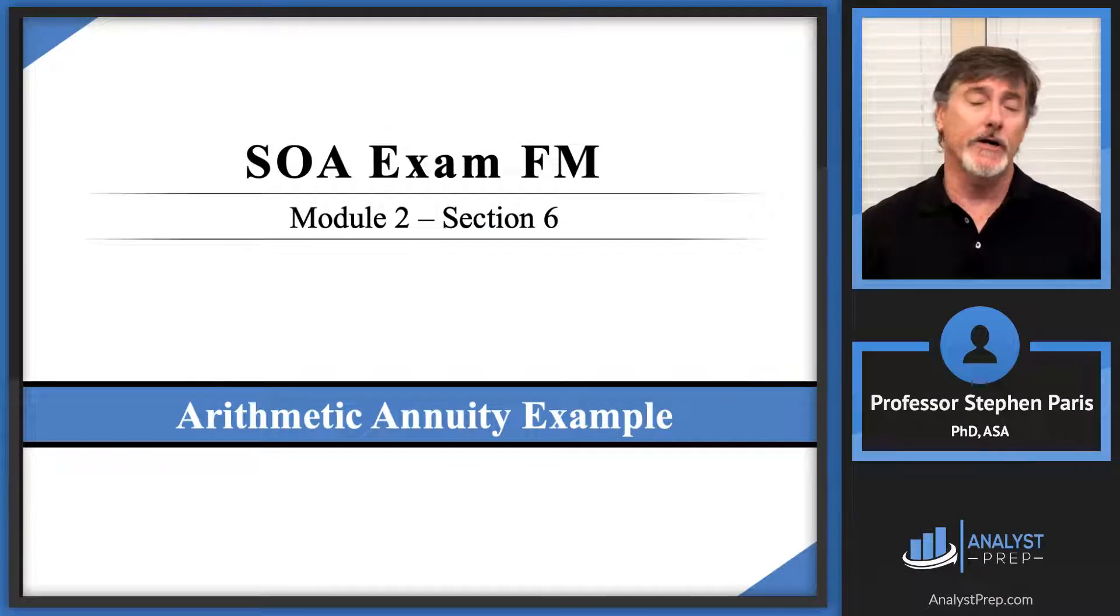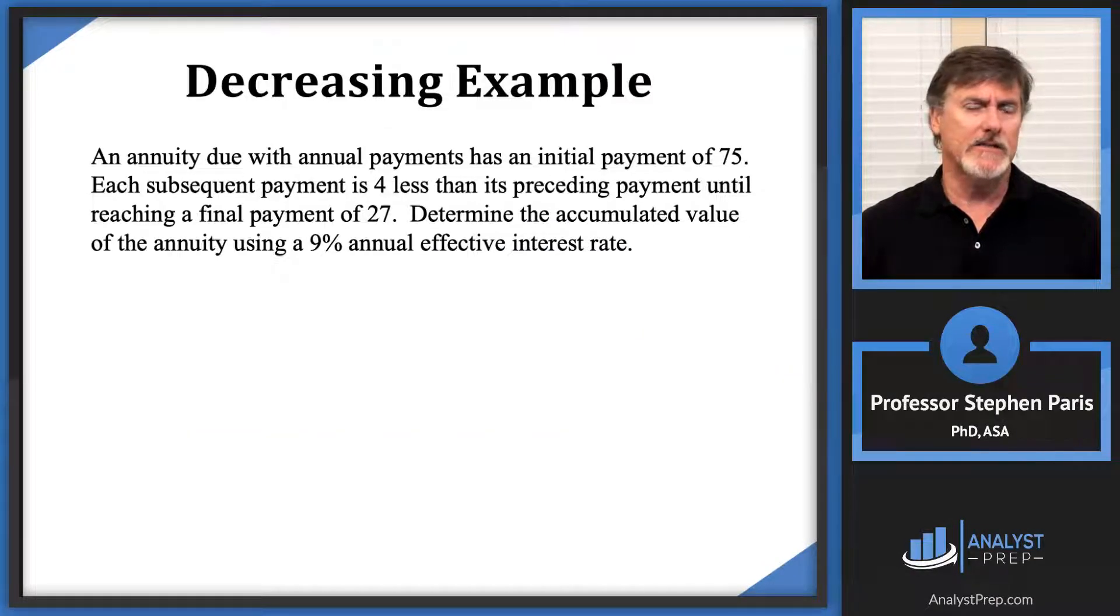Hi, in this video we're going to do another arithmetic annuity example. This is going to be a non-standard decreasing example. We've got an annuity due with annual payments that has an initial payment of 75. Each subsequent payment is $4 less than its preceding payment until reaching a final payment of 27.